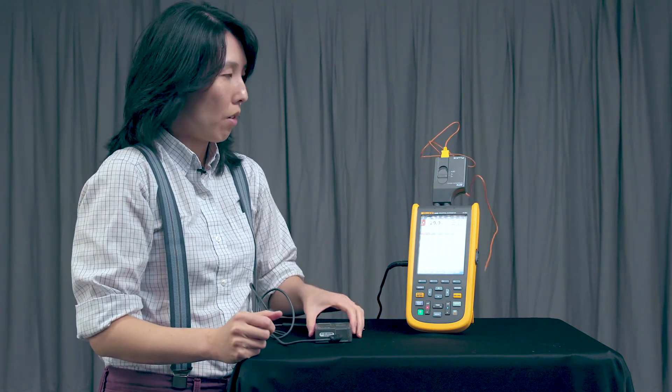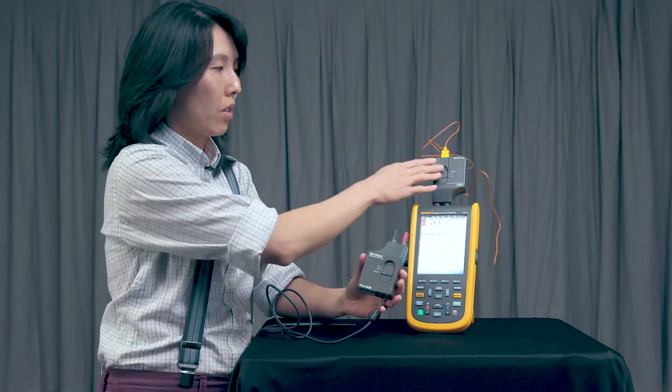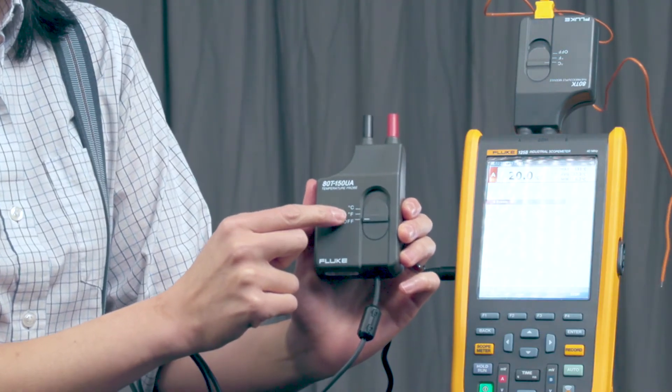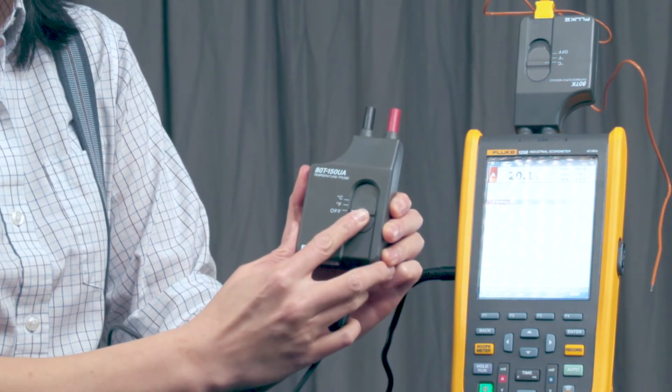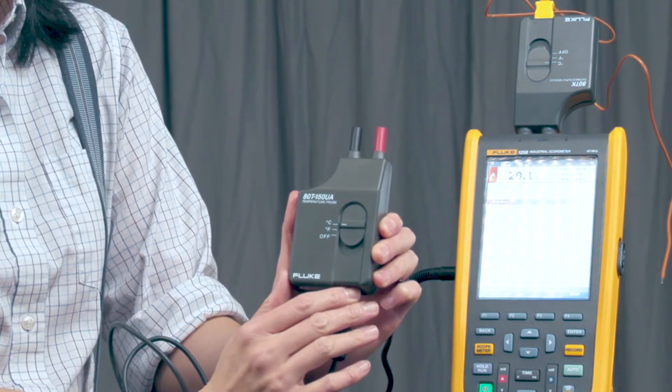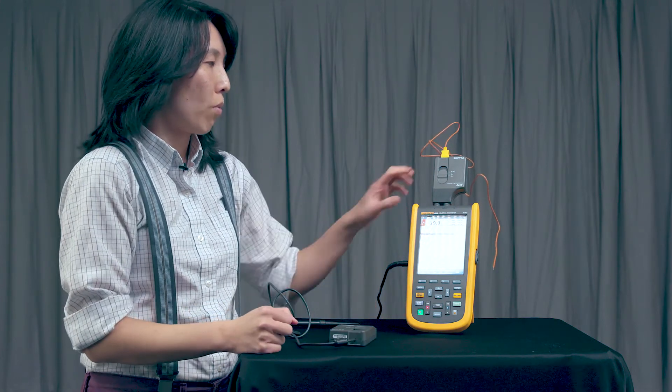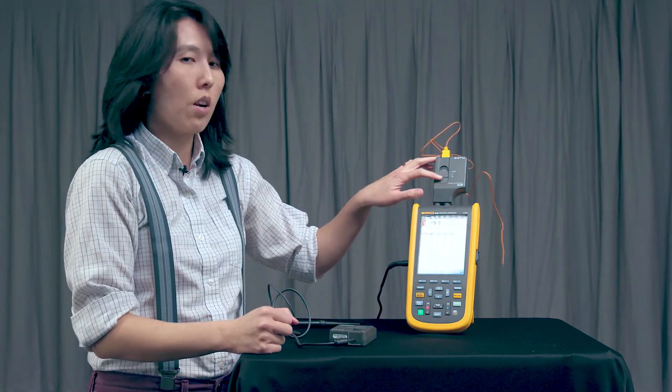Now, something you want to be aware of, and we'll look at this one because this one's upside down, is there's an off, a Fahrenheit, and a Celsius. You want to make sure that you're on the right option or the right units of temperature. And in this demonstration, we're going to use Celsius. So that's already on the right unit.